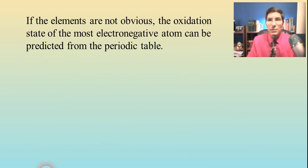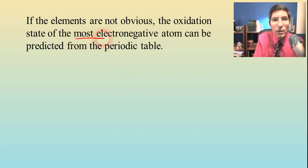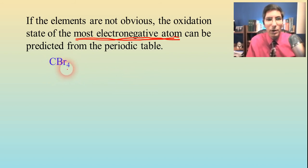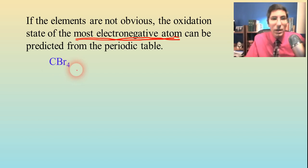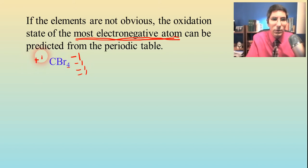Sometimes it's not going to be obvious — perhaps you'll have two elements that could have multiple oxidation states. If you're ever stumped, the oxidation state of the most electronegative atom is the one you can predict from the periodic table. For example, carbon tetrabromide: bromide is the most electronegative of those two elements — it's further to the right on the periodic table — so we predict bromide is negative one. We've got four of those, so four at negative one apiece is negative four, meaning the carbon would have to be positive four.